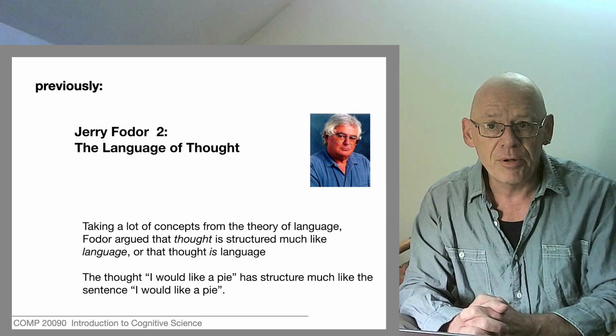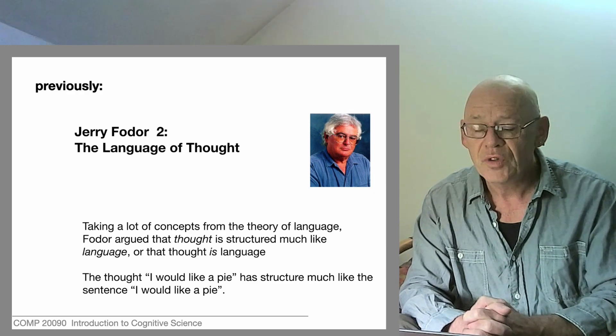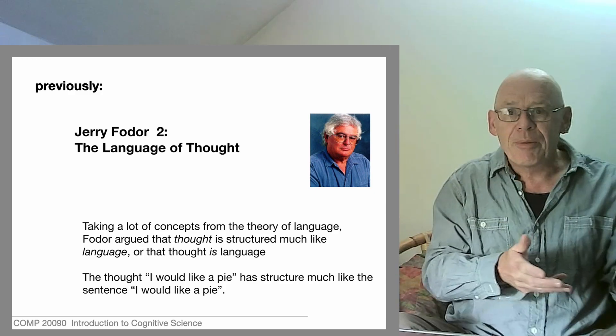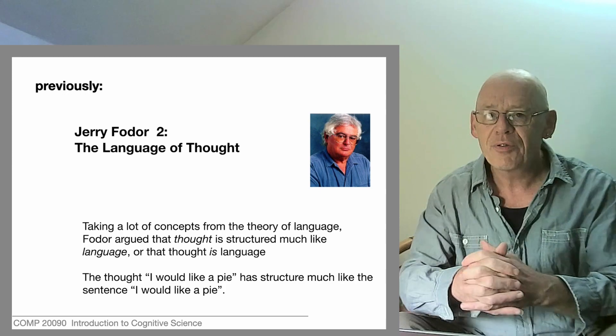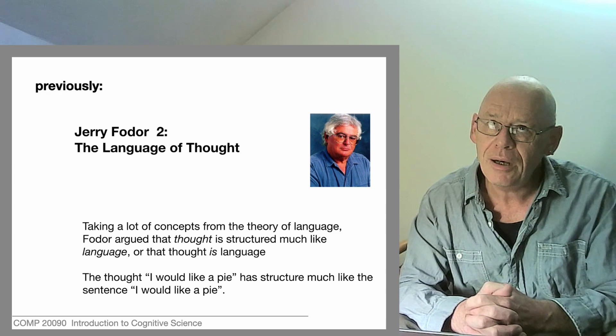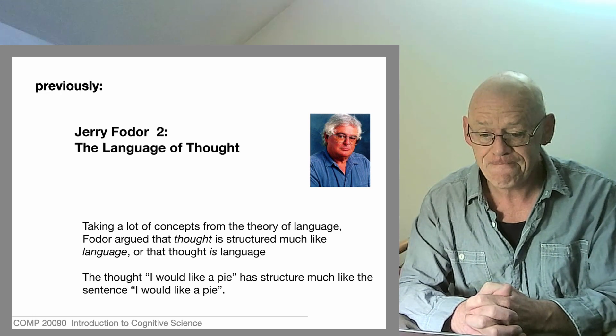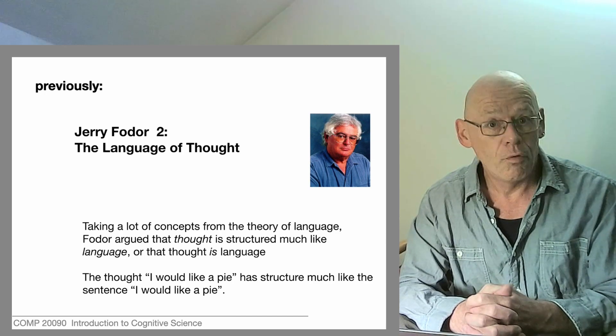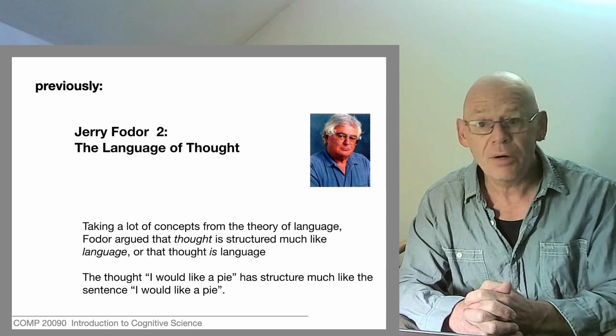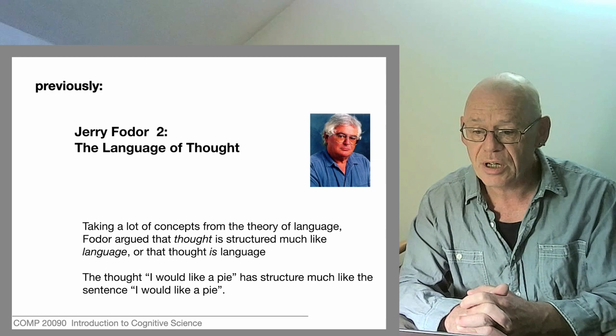Now, it's possible probably to want a pie without ever having a thought that's anything like a sentence. You're walking past a window. Smells good. Grab the pie. No language involved. It is, however, possible to sit there and think, I would like a pie. The kind of thing you could find yourself muttering under your breath. And so that kind of first person, one person thinking bears some resemblance, crucial resemblance to language or so Jerry Fodor is claiming.